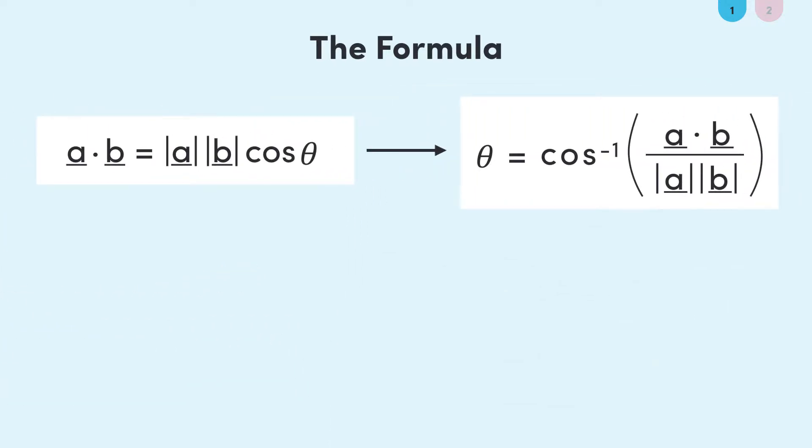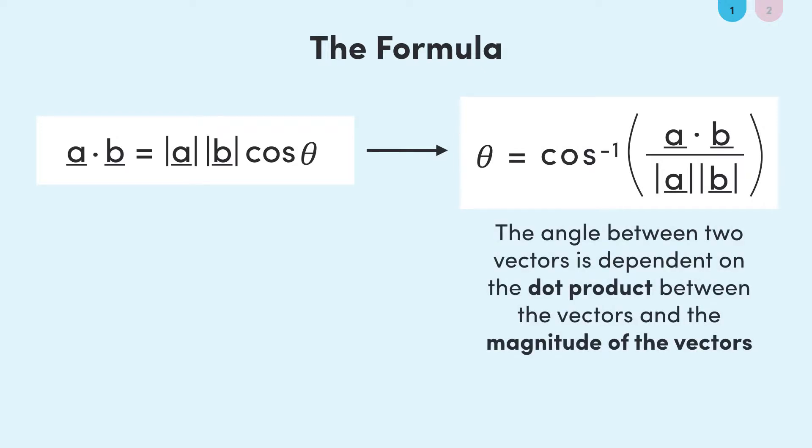And now theta is isolated. That's what we were after. An explicit formula for the angle between two vectors. This formula tells us that the angle between two vectors is dependent on the dot product between the vectors and the magnitude of the vectors. But this isn't really another formula that you have to lock away in your memory. Knowing the original formula should be enough to be able to rearrange to our new formula.